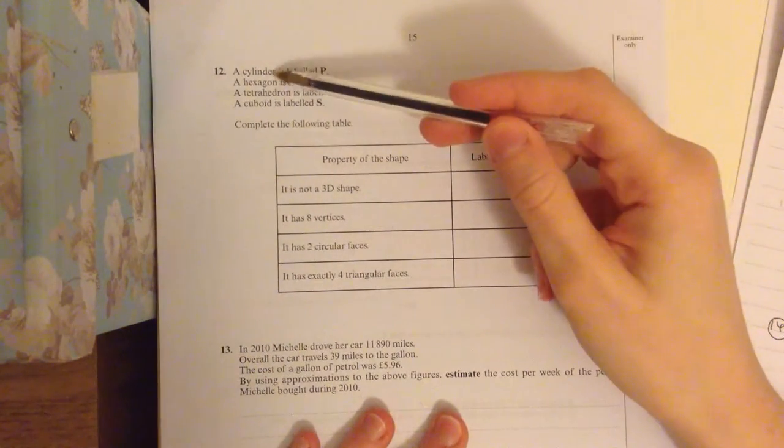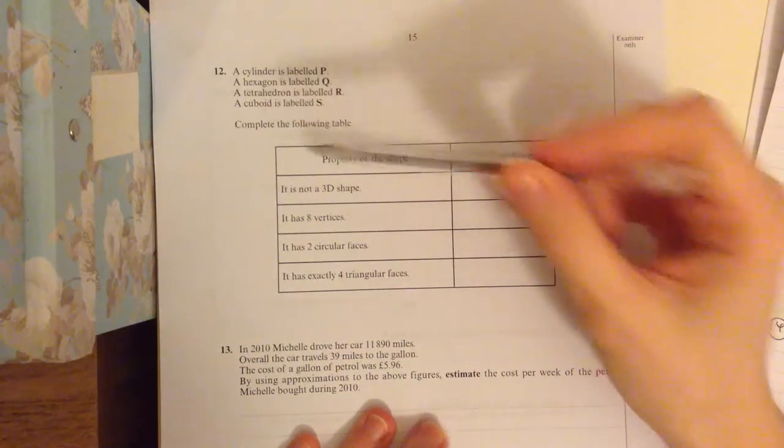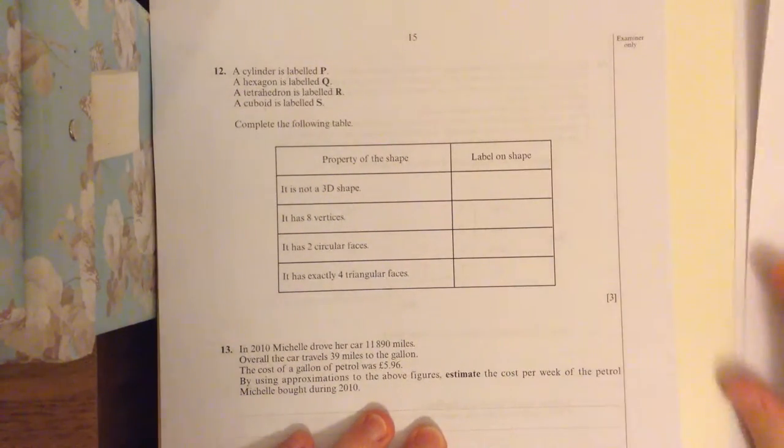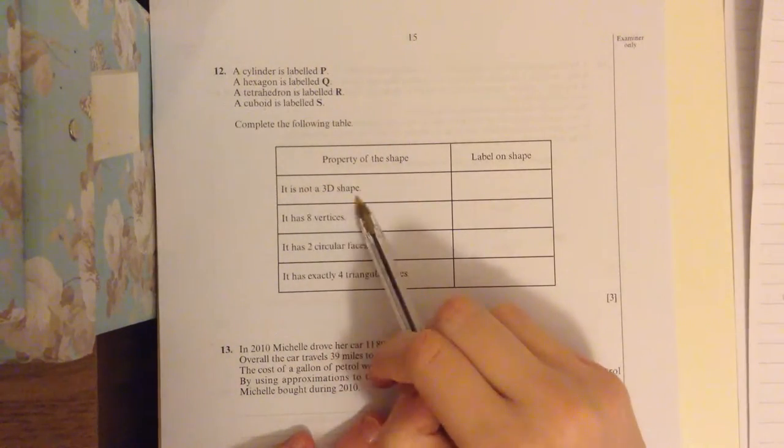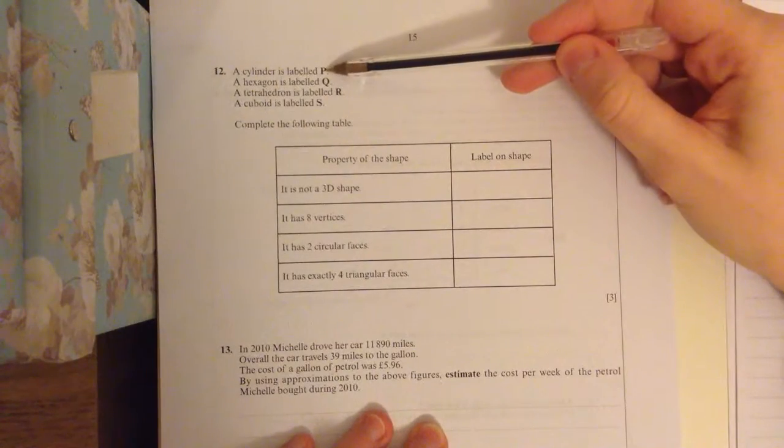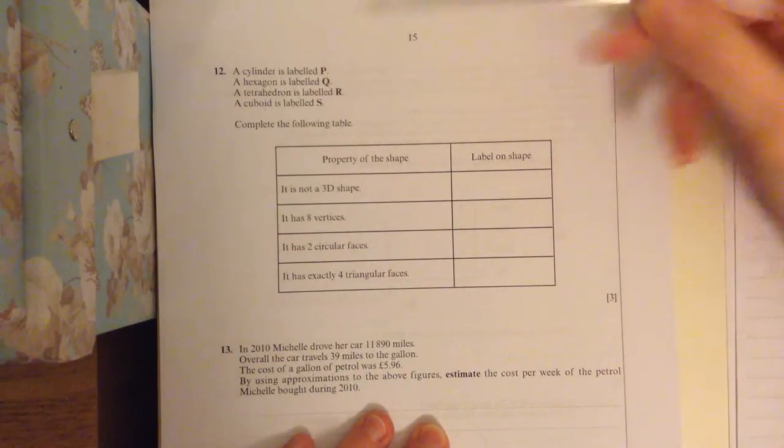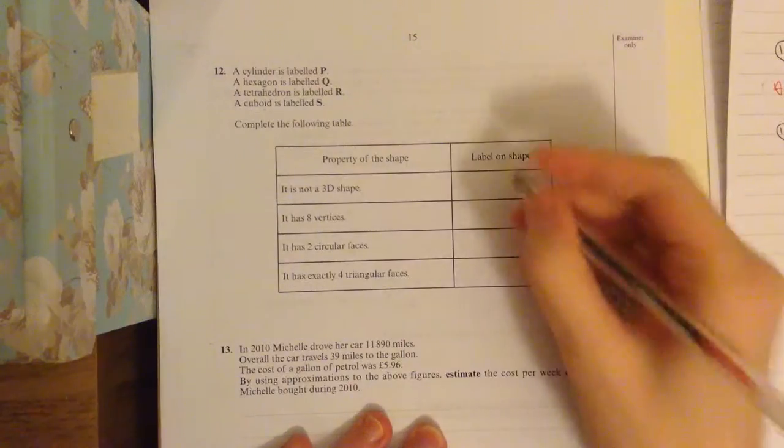So you have four shapes: a cylinder, a hexagon, a tetrahedron, and a cuboid. And you need to complete the table. So it is not a 3D shape. So a cylinder's 3D, a hexagon is 2D. So that's going to be Q.